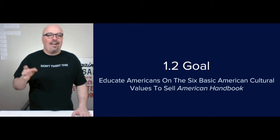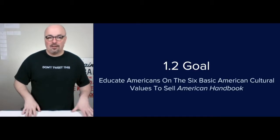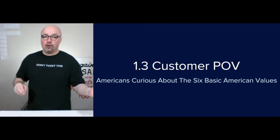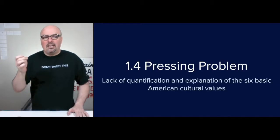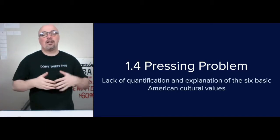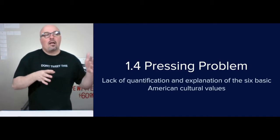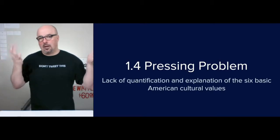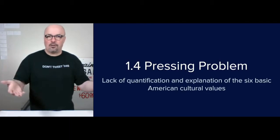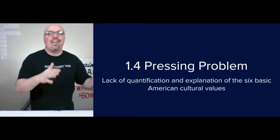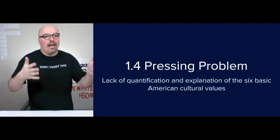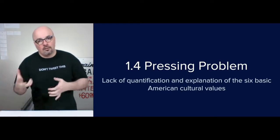Step 1.2 is the goal: to educate Americans on the six basic American cultural values in order to sell the American Handbook. The customer point of view is Americans curious about the six basic American values and the lack of quantification of what those values are. There's a lack of explanation for many people that haven't come across Marianne's life's work — American Ways, four editions of that book, and the introduction to American culture for ESL students. Now she's writing the version for Americans called American Handbook: What Your Grandparents Want You to Know. That's the pressing problem the book solves.